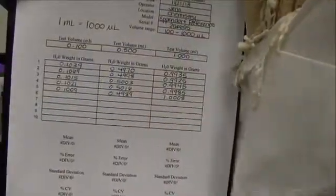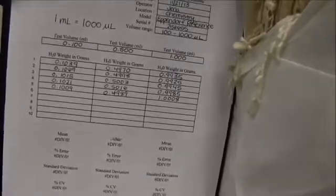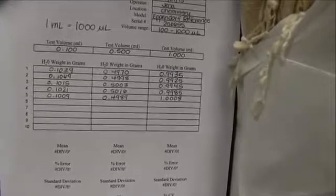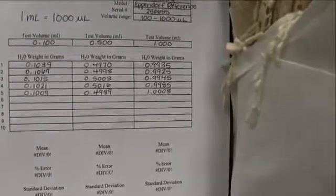So now that we have all the values that we need for our calibration, we are going to go ahead and take this to the computer and enter these values into Excel. And these will tell us whether or not our pipette has passed or failed calibration.